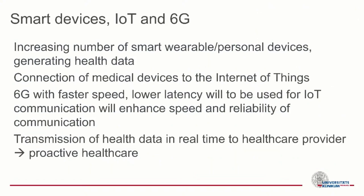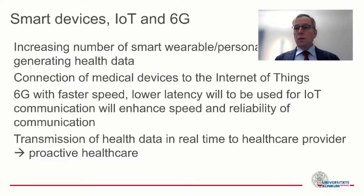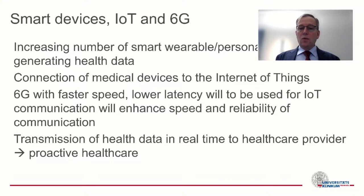As mentioned in the previous talk, we see more and more smart devices. We have the Internet of Things and the Internet of Medical Things, and of course we talk about 6G. We see an increasing number of smart and wearable personal devices generating health data. Those medical devices will be connected to the Internet of Things, and 6G with faster speed and lower latency will enhance speed and reliability of health data communication. Transmission of data in real time to healthcare providers will enable us to be more proactive in our healthcare.